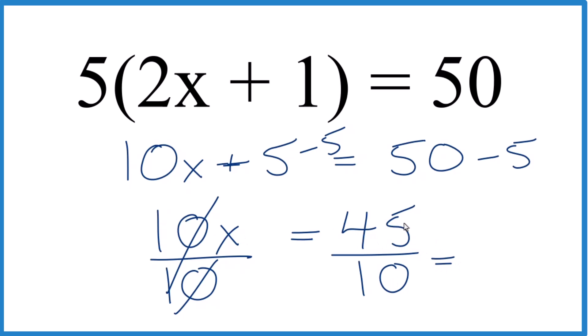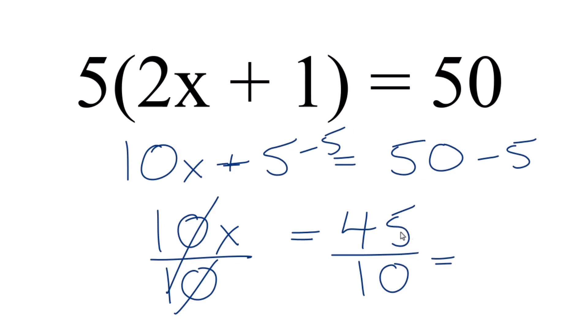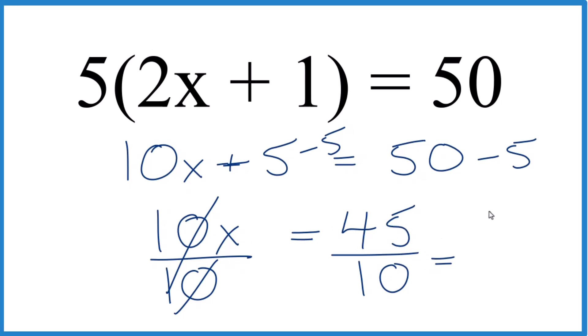5 goes into both 45 and 10. Let's just simplify that. 5 times 9 is 45, and 5 times 2, that's 10. So we have 9 over 2, 9 halves.